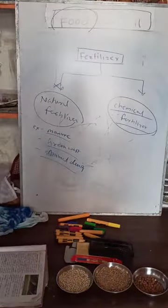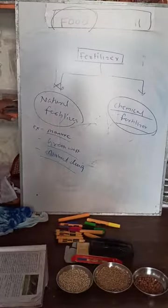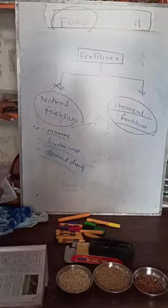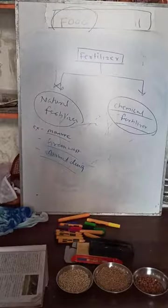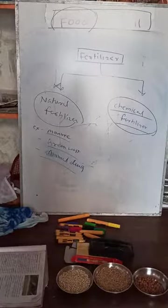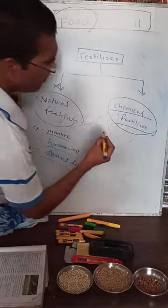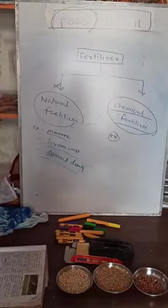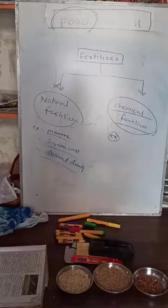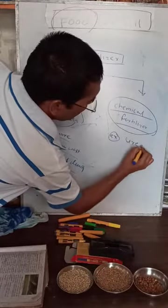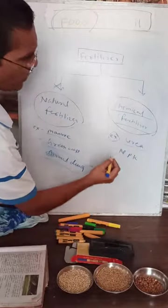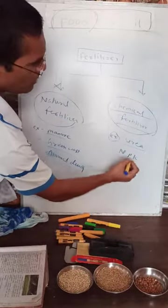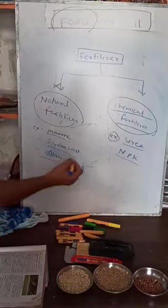Today most crops — grains, pulses — are grown using chemical fertilizer. Examples of chemical fertilizers are Urea, which is a nitrogenous fertilizer, and NPK — nitrogen, phosphorus, and potassium. Chemical fertilizer is prepared using chemicals. Natural fertilizer is also called organic fertilizer — it includes manure, compost made from decomposable garbage like vegetable peels and paper, green waste from farms, and animal dung.